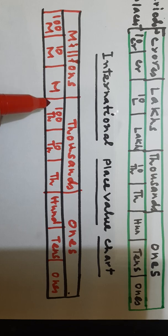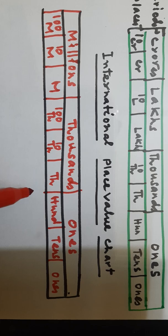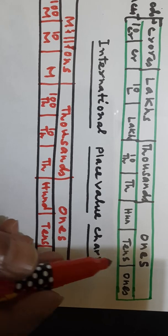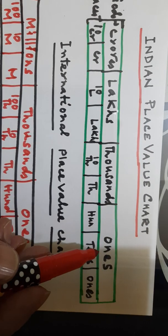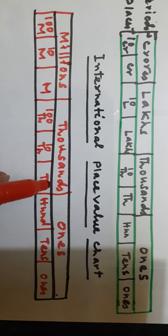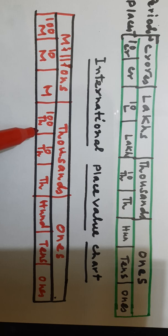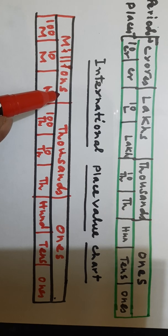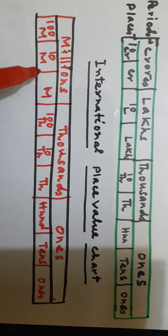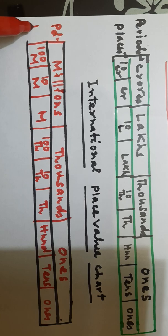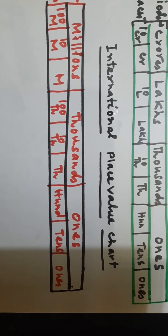In the ones period the places are ones, tens, and hundreds — this period and its places are the same in both the Indian and international place value charts. The difference starts in the thousands period: one thousand, ten thousand, and hundred thousands. Then the millions period comes with one million, ten million, and hundred million. The upper portion shows the period and the lower part shows the places. This is the international place value chart.